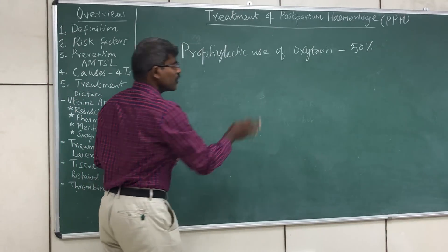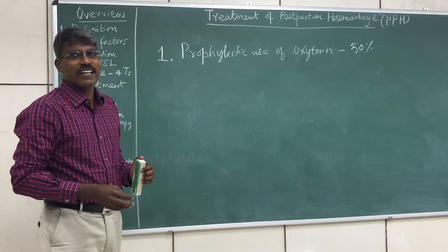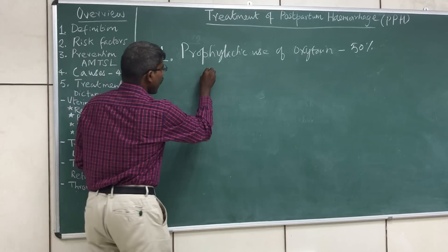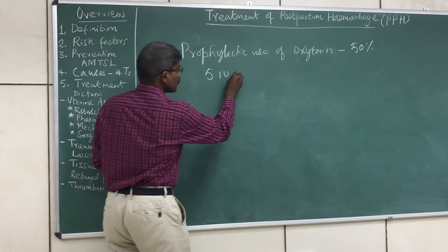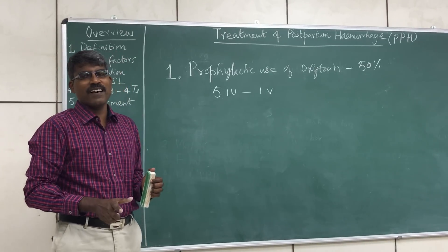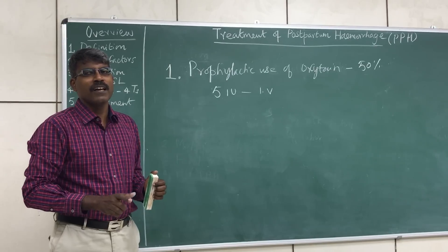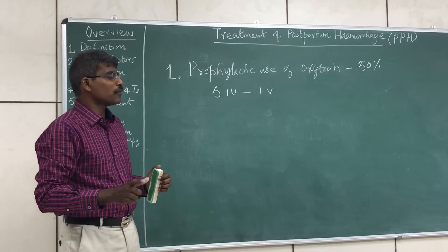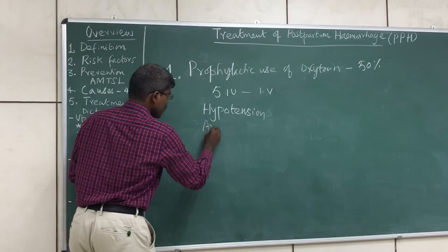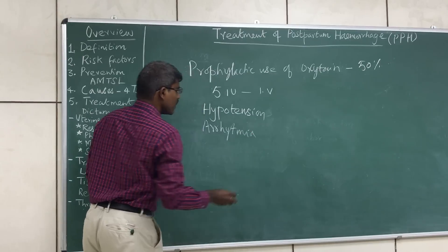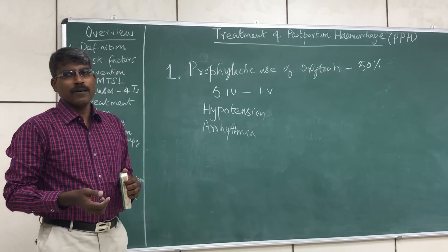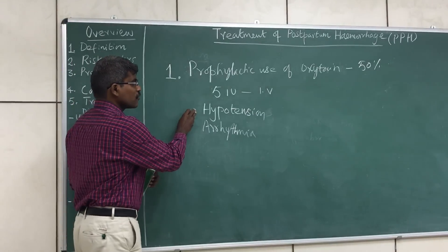Oxytocin is the drug of choice for prophylactic management of postpartum hemorrhage. It is given as intravenous infusion of 5 international units. One important practical point: oxytocin should never be given as a rapid IV bolus or as an undiluted solution injected rapidly. If given this way, two dangerous effects can occur — rapid hypotension and arrhythmia.